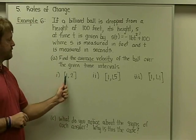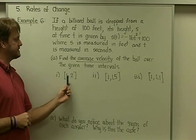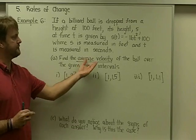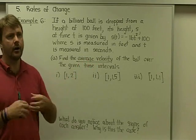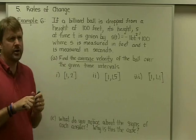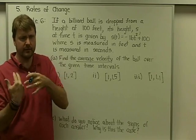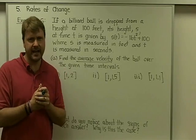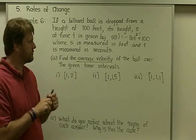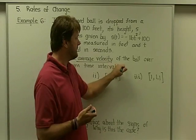So for our part A, our first time interval will be from one second to two seconds. Well, to find an average velocity, all you've got to do is think about your old school formula for relating distance, velocity, and time. And that formula, hopefully you remember, is distance equals rate times time.